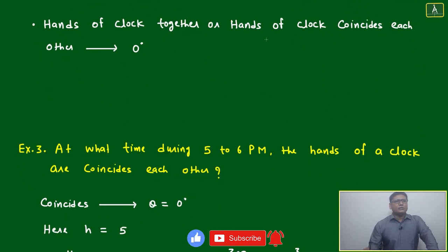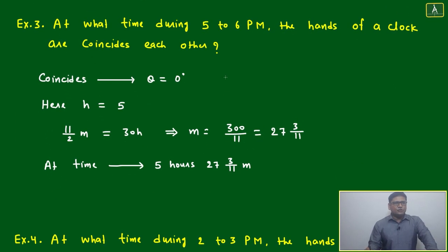Hands of a clock together or hands of a clock coinciding with each other means zero degrees. Sometimes it will be written 'together,' sometimes 'coincide'—the meaning is the same. It will be at zero degrees. Now let's look at another example: at what time during 5 to 6 PM are the hands of a clock coinciding with each other?